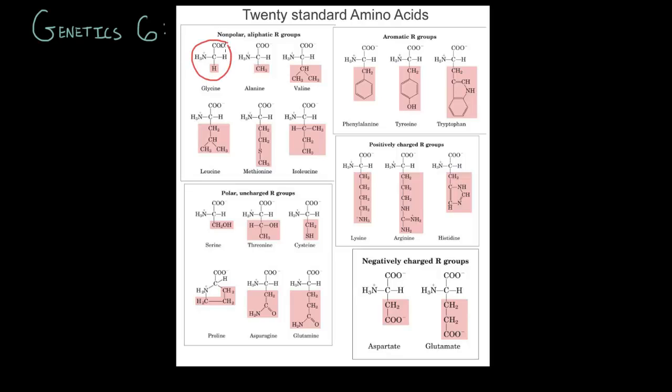Each amino acid has a name but sometimes we like to shorten that name. So we take the first three letters. Glycine we like to shorten to GLY. Alanine we shorten to ALA and I think you get the idea. Valine would be VAL and so on.